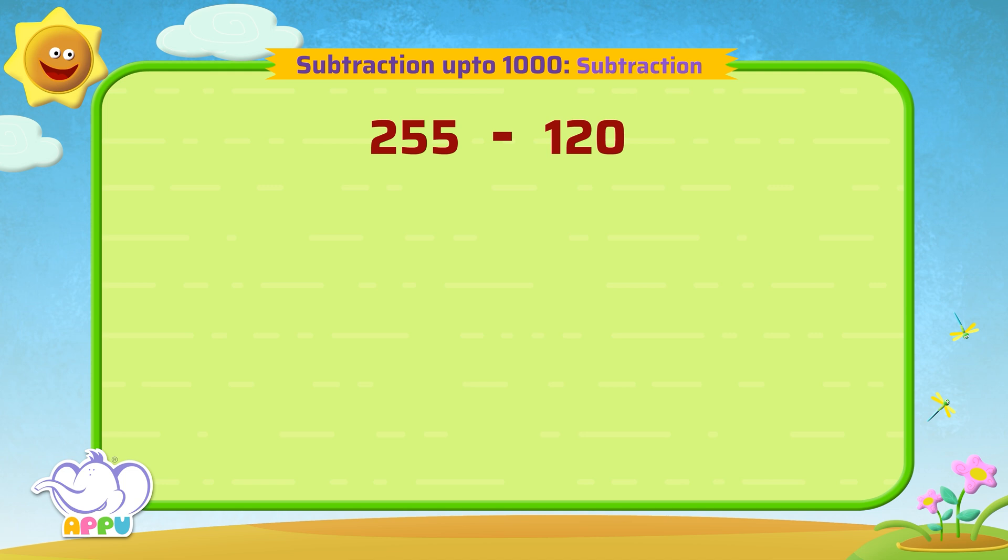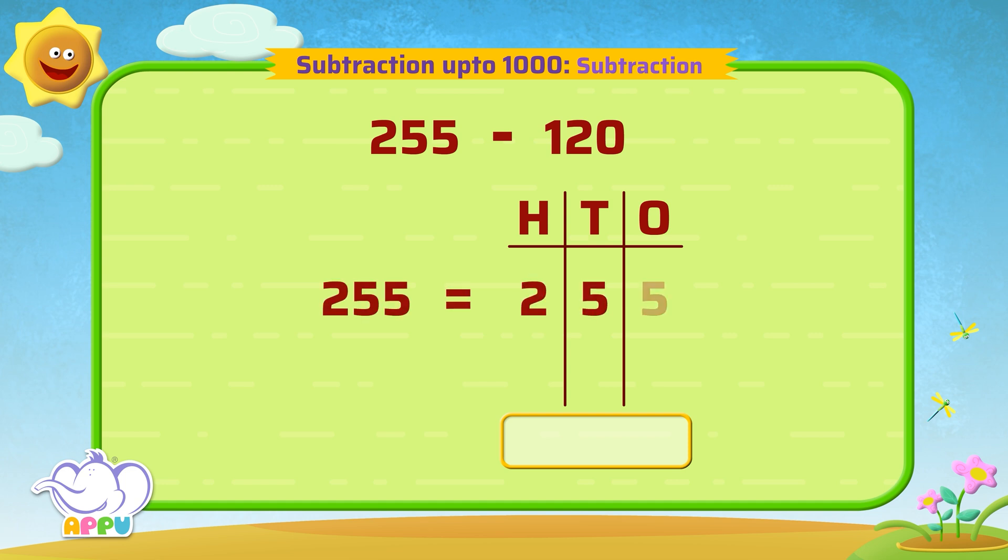We write 255 as hundreds, tens, and ones. Which is two hundreds, five tens, and five ones.